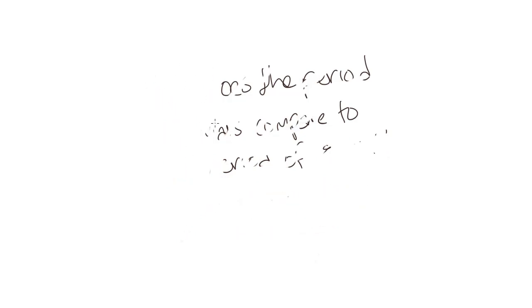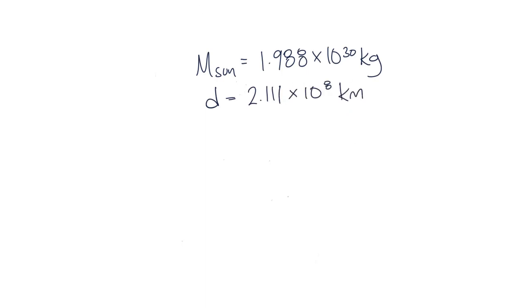We have previously derived an equation for the period of a satellite undergoing uniform circular motion, and this equation is T, the period squared, divided by r cubed is equal to 4 pi squared divided by big G big M.